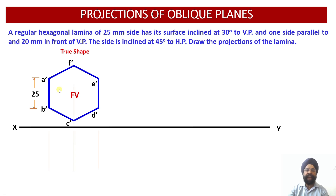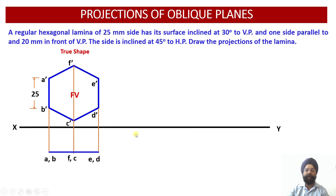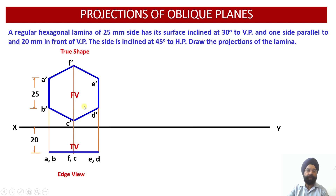Now we draw the top view of this lamina, which will be an edge view, because the lamina is perpendicular to the horizontal plane. Its projection onto the horizontal plane will therefore be an edge view. One important detail: edge AB is at a distance of 20 mm in front of the vertical plane. Mark this 20 mm distance first, then draw the edge view. The top view gives us the edge view, while the front view gives us the true shape.